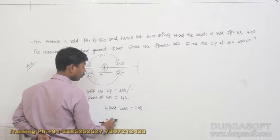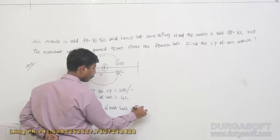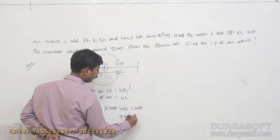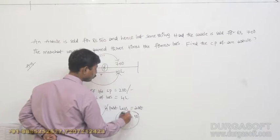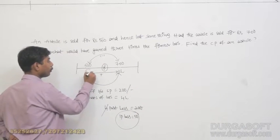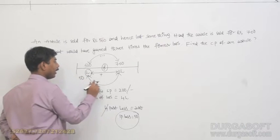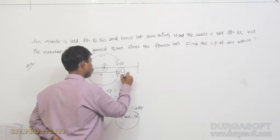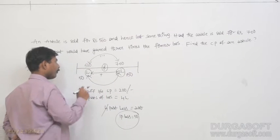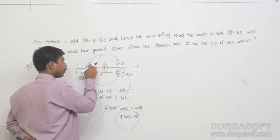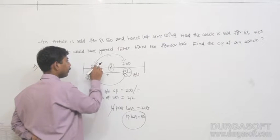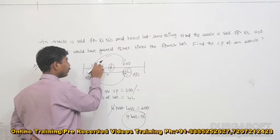Four parts of a loss equals to 200 means one part of a loss equals to Rs.50. One part of a loss equals to Rs.50 means in this case the loss obtained is Rs.50, and the profit obtained is Rs.150. If we add the loss to the selling price, that should be the cost price.